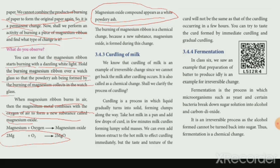The next topic is curdling of milk. Curdling of milk is an example of irreversible changes, since we cannot get back the milk after curdling occurs. It is also called a chemical change. Curdling is a process by which a liquid gradually turns into a solid.